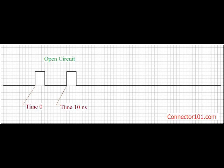Let's say we have a signal generator at one end of a cable and the other end is left open. At time 0, we send the incident pulse. The pulse travels down the line and gets reflected back at time 10 nanoseconds.